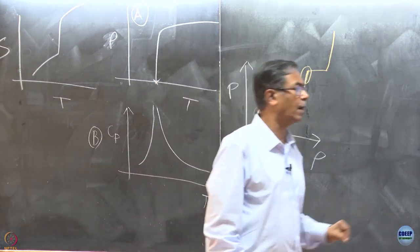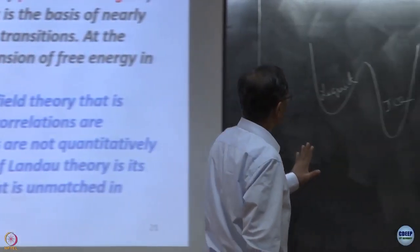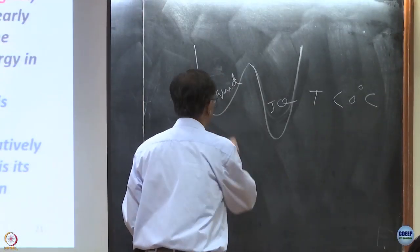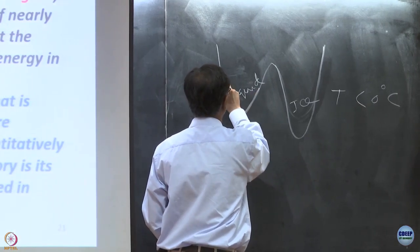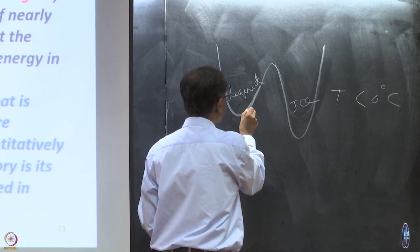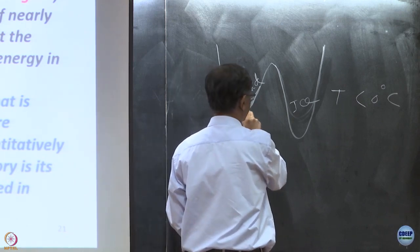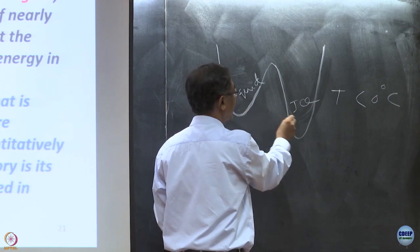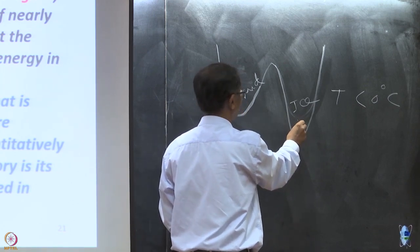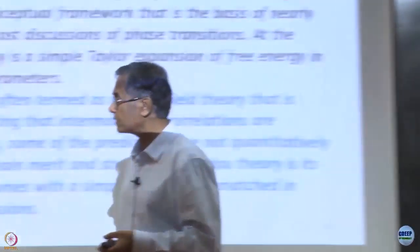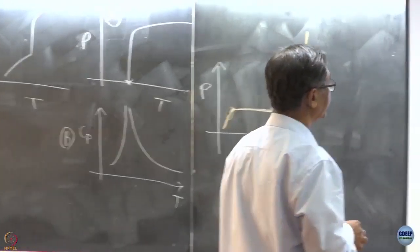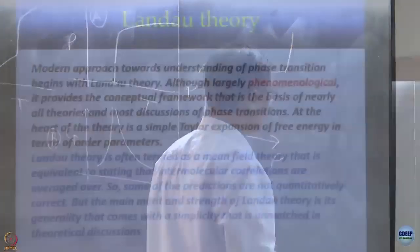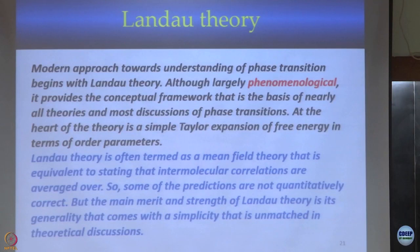He rightly guessed that the way to do that is to expand the free energy of the new phase in terms of the characteristics of the old phase — what we call the Landau expansion. If I can expand the free energy in terms of those characteristics, then I can look for a certain discontinuity. That is of course ambitious, and it is the reason it does not fully work. Some predictions are not quantitatively correct, but the main merit of Landau theory is its tremendous generality combined with unmatched simplicity.